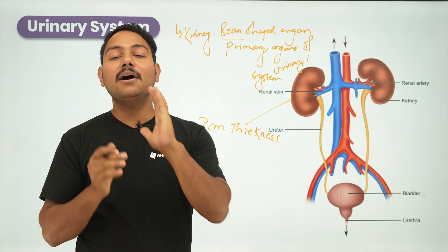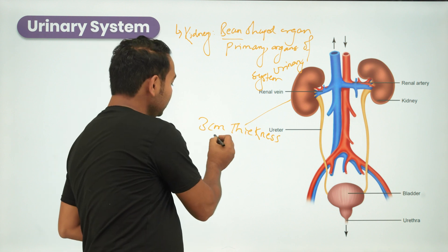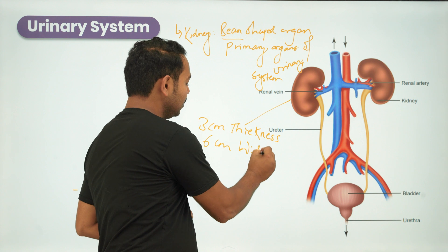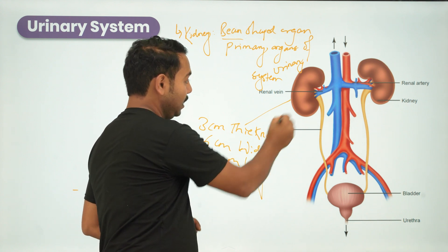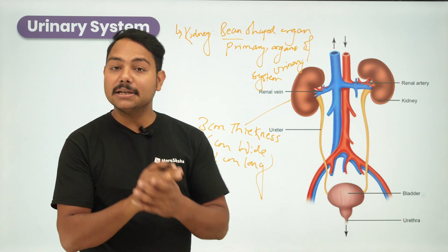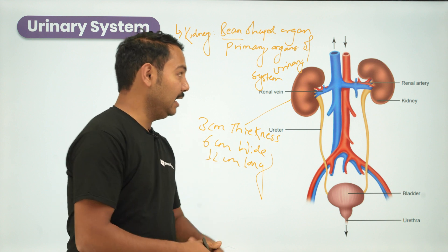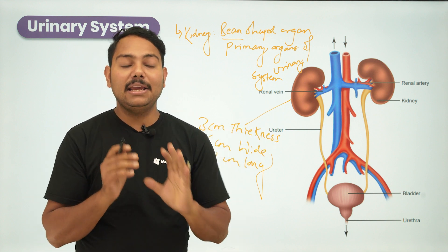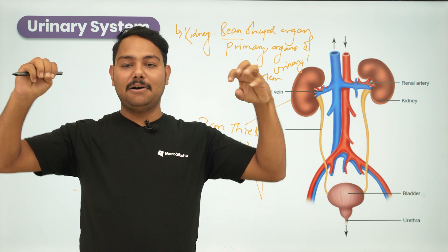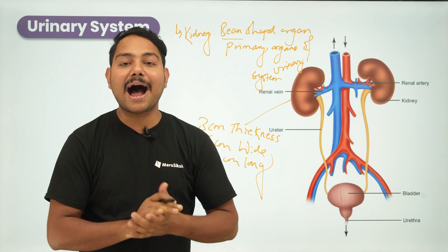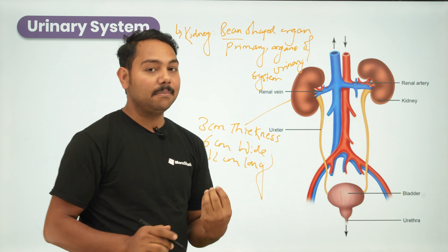In an adult, each kidney is 3 cm thick, 6 cm wide, and 12 cm long. The ureter and renal vein leave the kidney, and the renal artery enters the kidney at a position called the hilum.